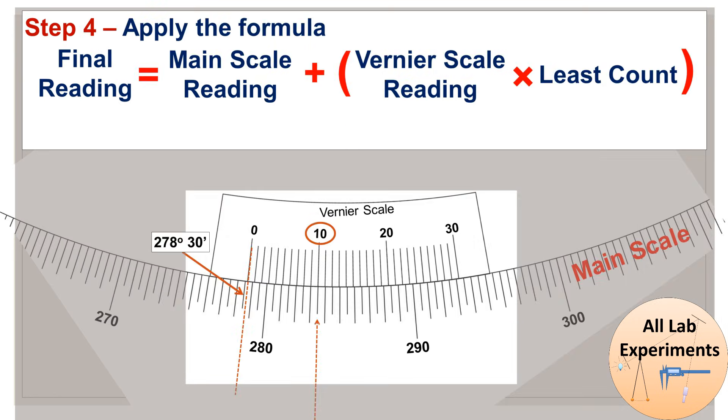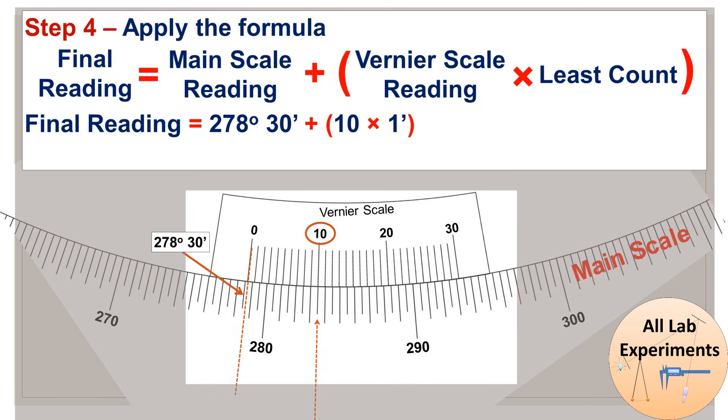Now step 4: apply the formula. So the final reading is equal to main scale reading which is 278 degrees 30 minutes, plus vernier scale reading which is 10, times least count which is 1 minute. And you will get 278 degrees 30 minutes plus 10 minutes. So overall this is 278 degrees 40 minutes. Isn't it simple?